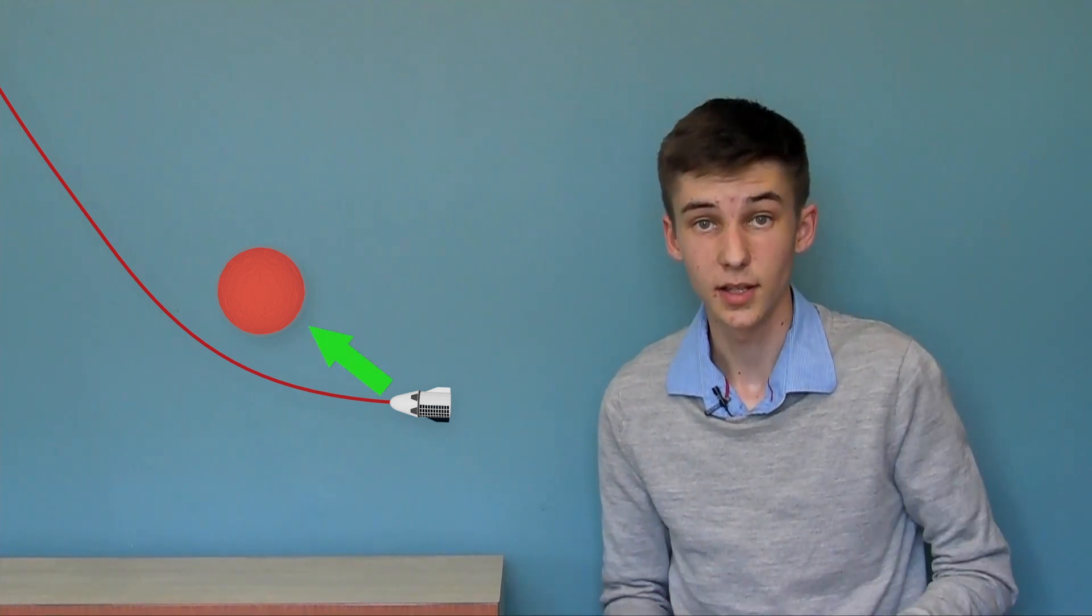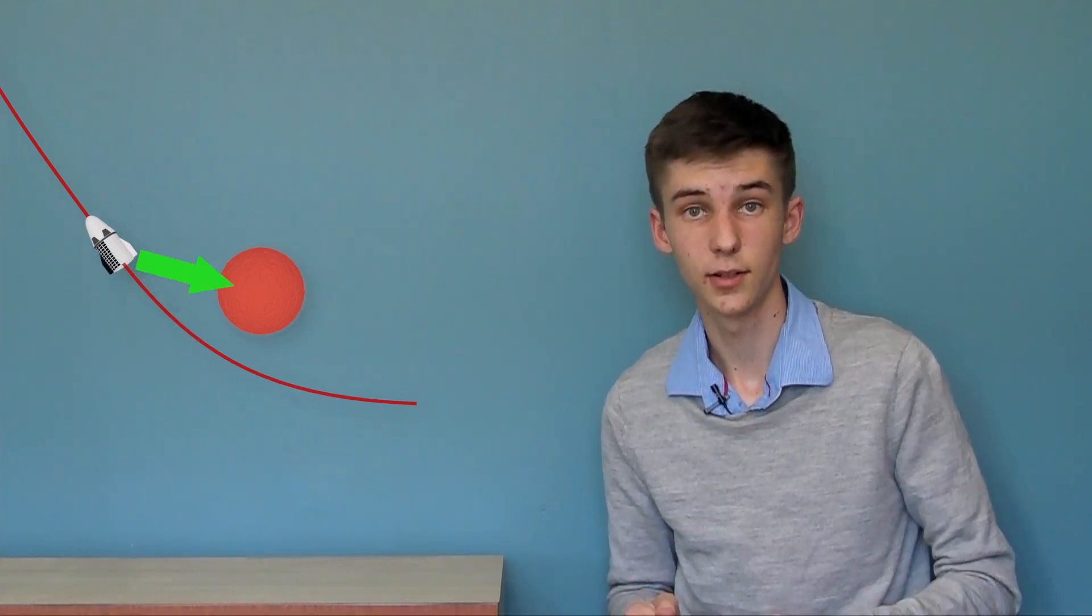As we're approaching, its gravity is pulling us towards it, so we're speeding up. And as we're going away, gravity is still pulling on us, which is slowing us down. This is symmetrical. At symmetrical points on either side, we're going at the same speed here as here, same speed here as here.